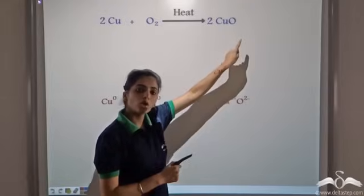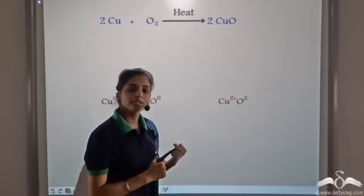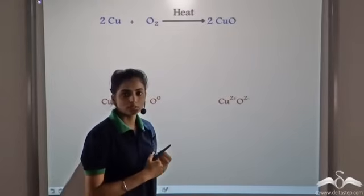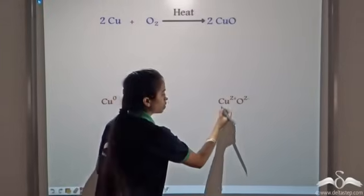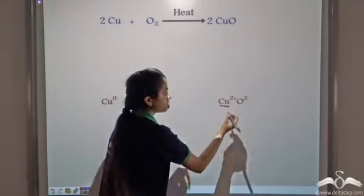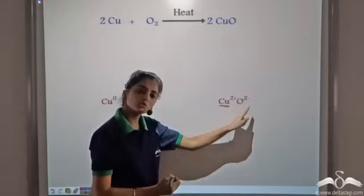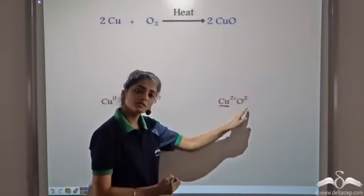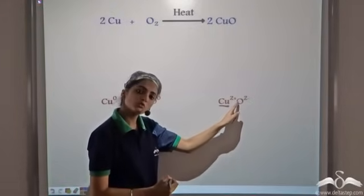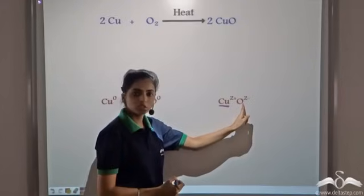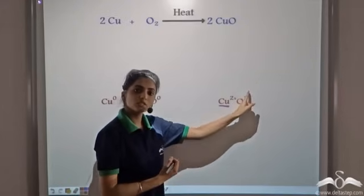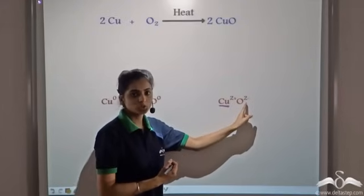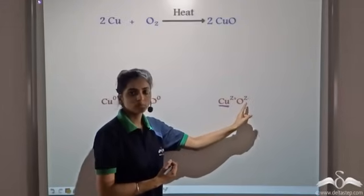And oxygen gains two electrons. So copper loses two electrons and becomes 2+, and oxygen gains two electrons and becomes 2−.